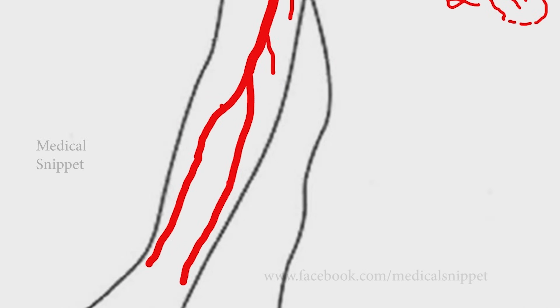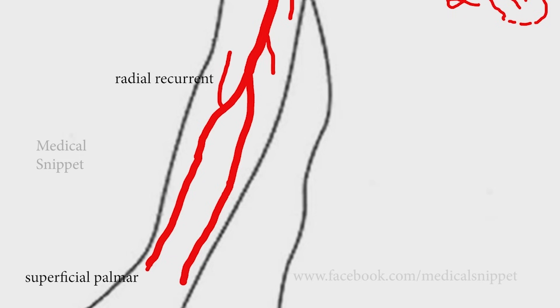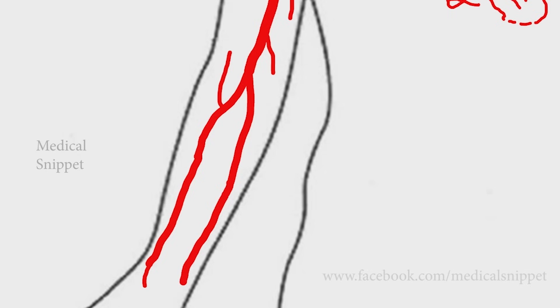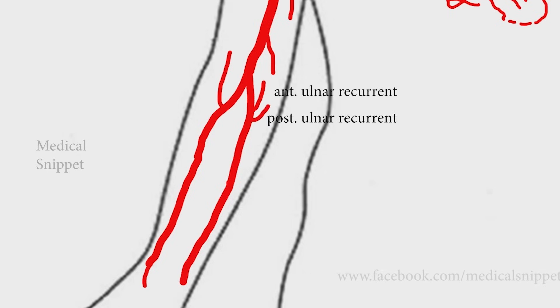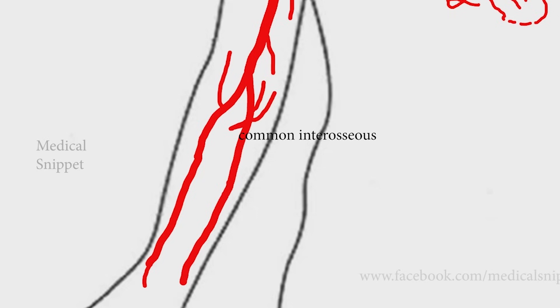The radial artery gives rise to the radial recurrent artery and the superficial palmar branch. The ulnar artery gives rise to the anterior and posterior ulnar recurrent arteries, and the common interosseous artery, which gives rise to the anterior, posterior, and recurrent interosseous arteries.